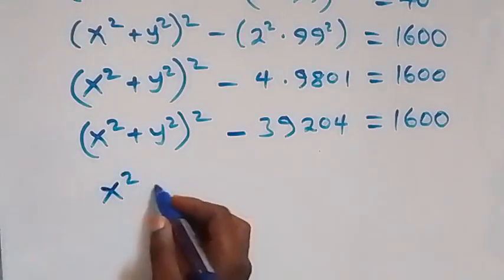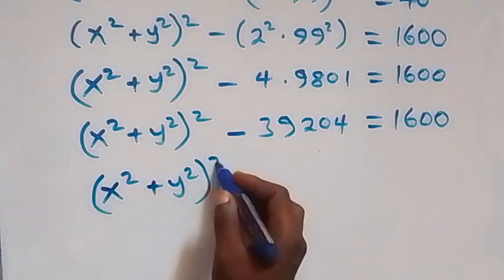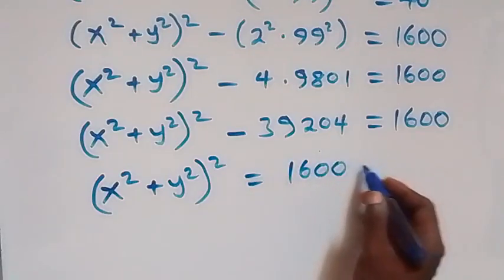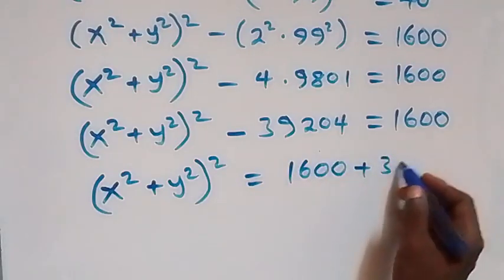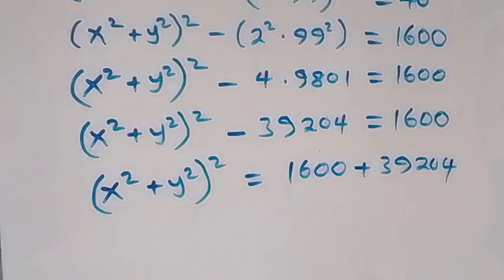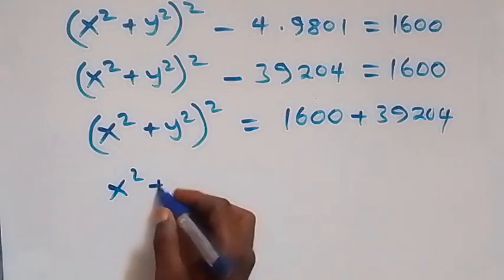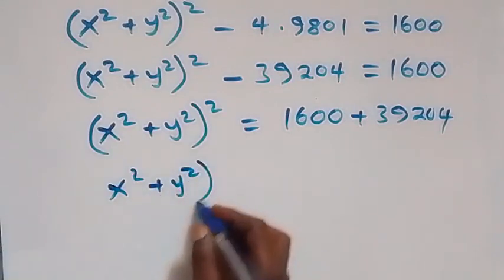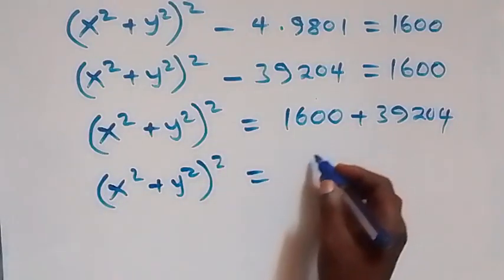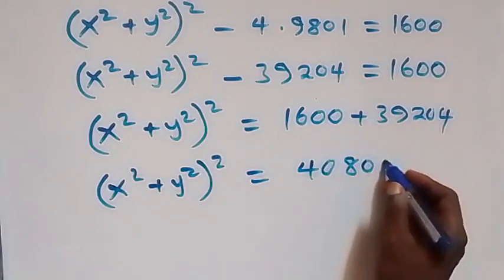Taking minus 39,204 to the other side, it becomes plus, and we have (x squared plus y squared) squared equals 1,600 plus 39,204, which equals 40,804.